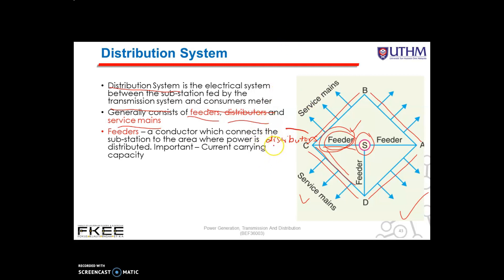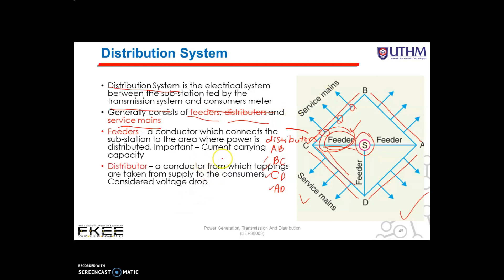We have AB, BC, CD, and AD — these are all the distributors. The current through a distributor is not constant because tapings are taken at various places along its line. While designing a distributor, voltage drop along its line is the main consideration, since the statutory limit of voltage variation is plus or minus 6% of the rated value at the consumer's terminal.